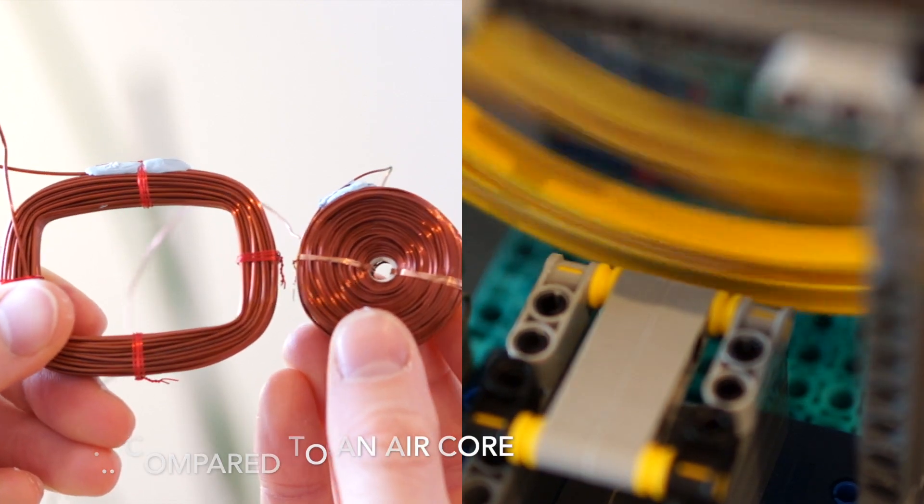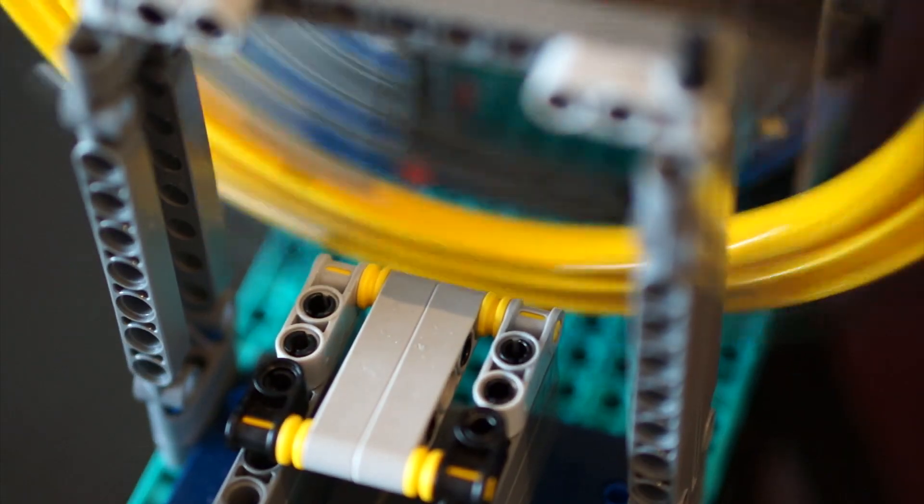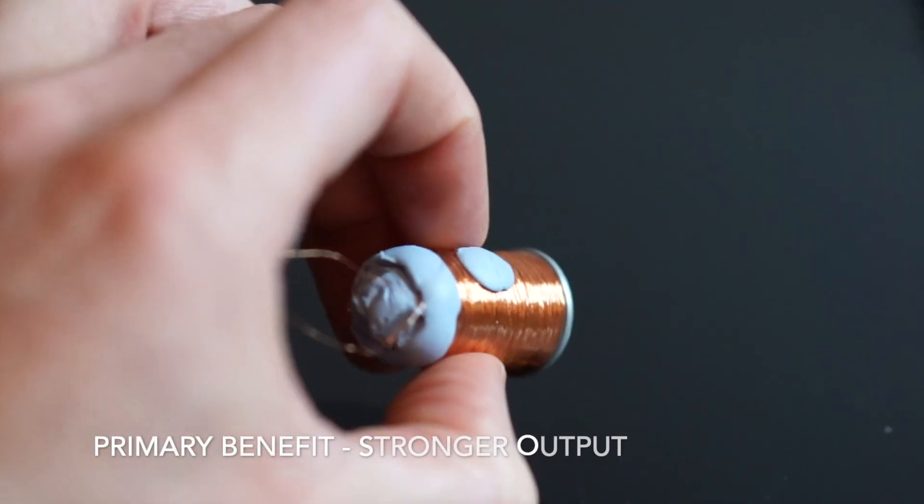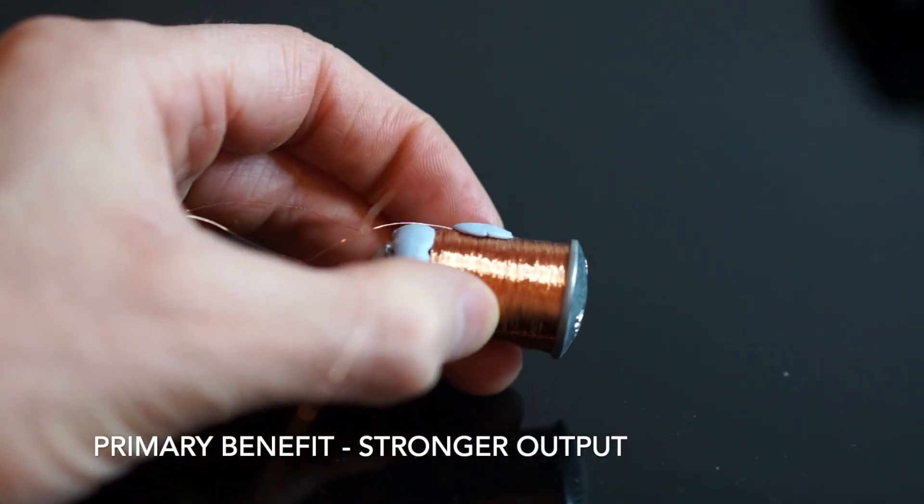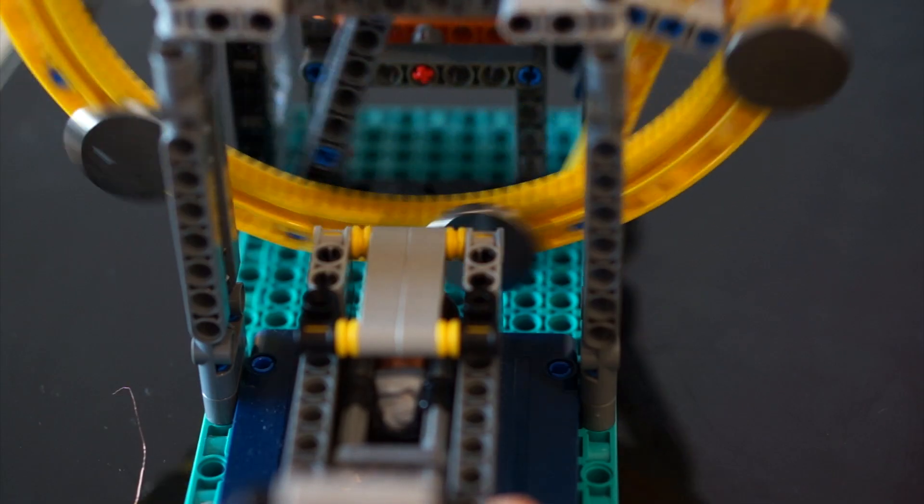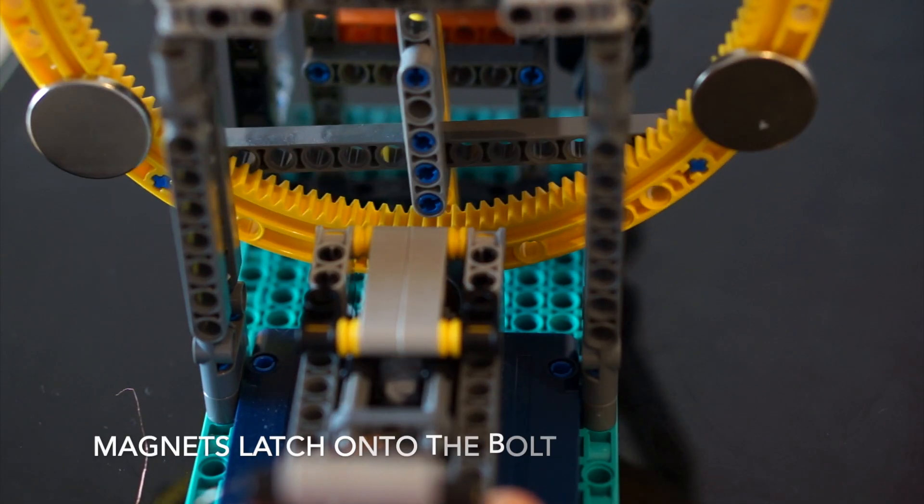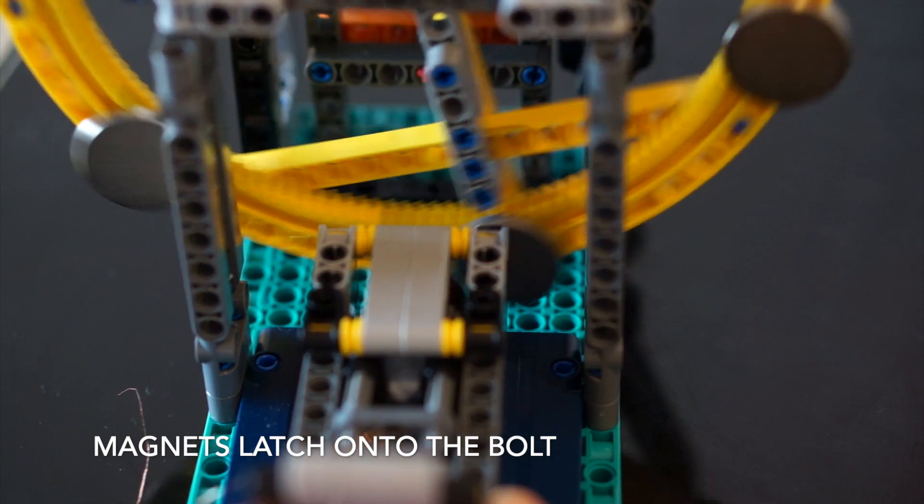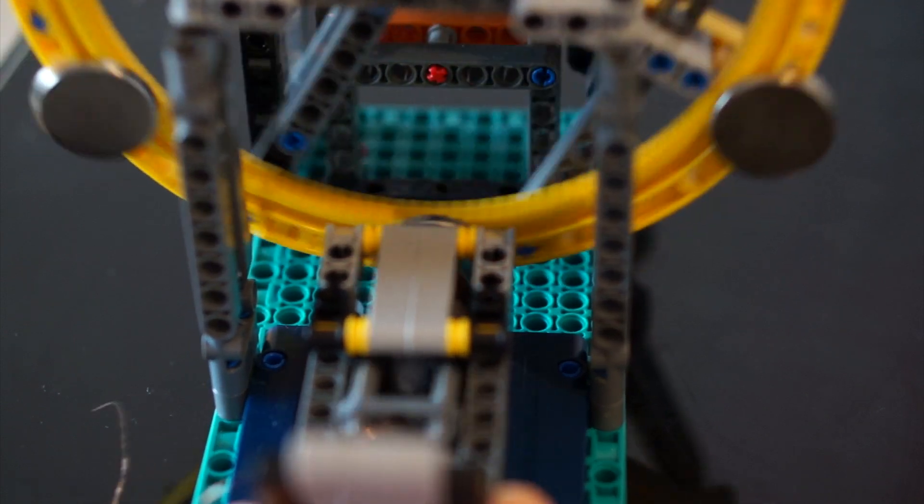There are however benefits and drawbacks to using a metal core. As we just mentioned the primary benefit is that we can typically drive a stronger output with a metal core. The drawback though is that because these magnets are attracted to the metal core there is significant drag created when you try to move the magnets.